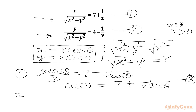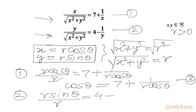Now for equation 2 after substitution: we write r·sinθ / r = 4 − (1/r)·sinθ. The r's cancel again, giving sinθ = 4 − (1/r)·sinθ. This is equation 4.